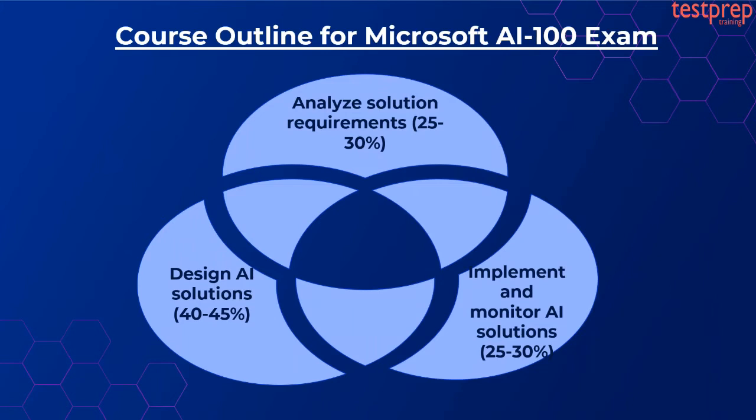Course outline for Microsoft AI 100 exam: First, analyze solution requirements, which comprises 25-30% weightage for this exam. Second, design AI solutions, which comprises 40-45% weightage for this exam. Third, implement and monitor AI solutions, which comprises 25-30% weightage for this exam.